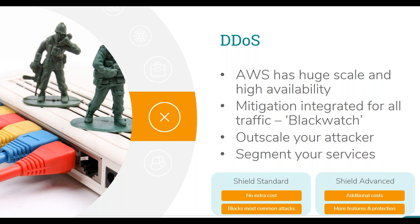To wrap up DDoS: we have two different AWS services. Shield Standard has no extra cost and is effectively what we've described above. Shield Advanced is a paid-for service that gives you better monitoring and detection systems and some cost protection — if you scale your way out of an attack, AWS will absorb some of the costs. For the Advanced plan, the most valuable thing you get access to is the DDoS Response Team: specialists who live this stuff day in day out and will help you mitigate and escape an attack.